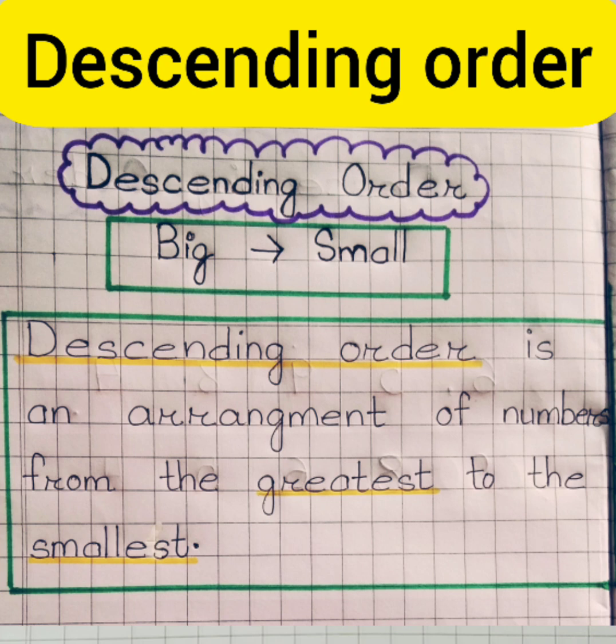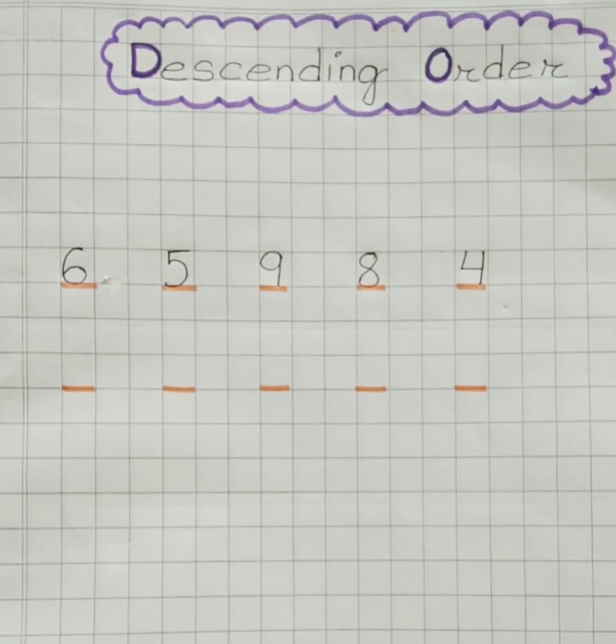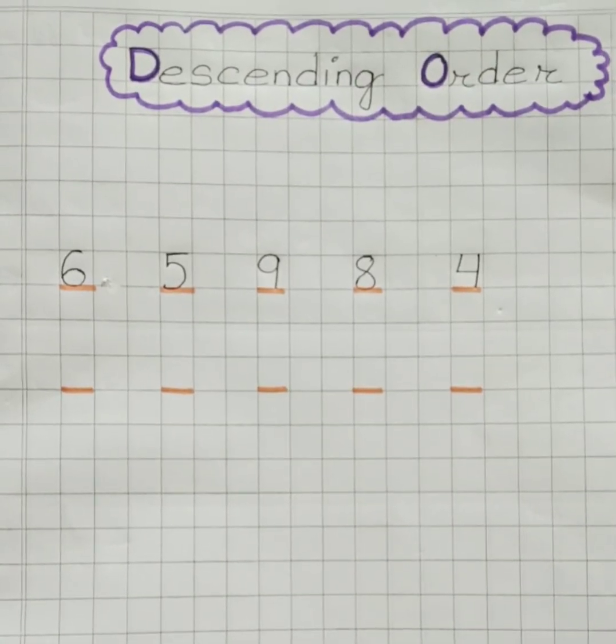When we arrange the numbers in descending order, we start arranging the numbers by placing the greatest or the biggest number first and move towards the smaller numbers one by one.